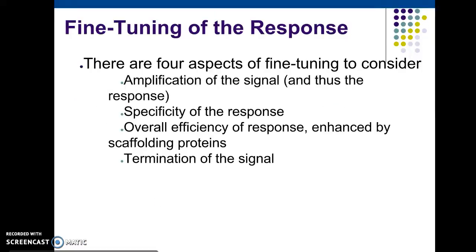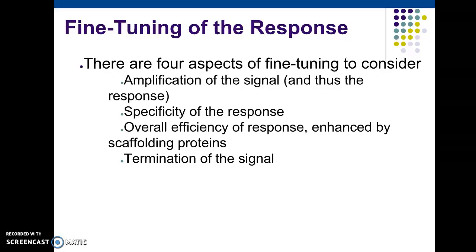Now, fine-tuning of the response — there are four aspects to consider. The first is amplification of the signal, which involves a more elaborate enzyme cascade. Essentially, smaller numbers of signaling molecules can release hundreds of responses. Your textbook uses the example of a small molecule like epinephrine, the hormone, going through the membrane.